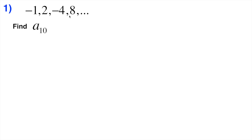So we're going to assume by default it's geometric, and we'll confirm that as we go. Here is our explicit formula for geometric sequences: A sub n equals A1 times r to the power of n minus 1, where A1 is the first term in the sequence, r is the ratio, and n is the term number.